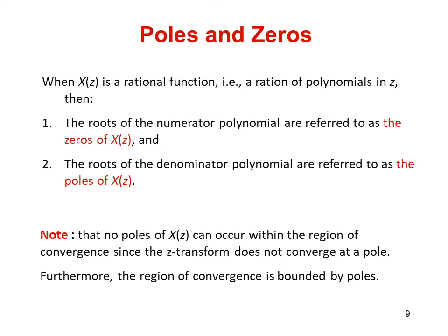Now we define what are poles and zeros. When X(z) is a rational function, that is a ratio of polynomials in Z, the roots of the numerator polynomial are referred to as the zeros of X(z) and the roots of the denominator polynomial are referred to as the poles of X(z). No poles of X(z) can occur within the region of convergence since the Z-transform does not converge at a pole. Furthermore, the region of convergence is bounded by the poles.